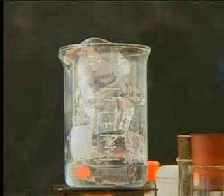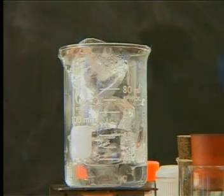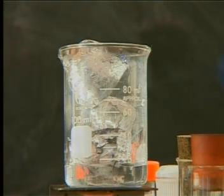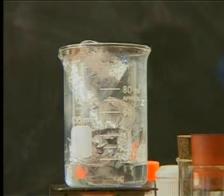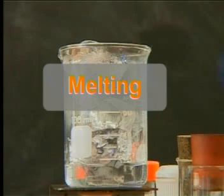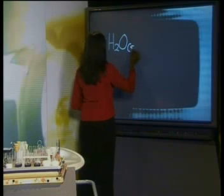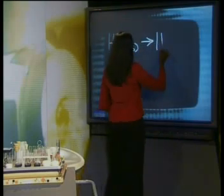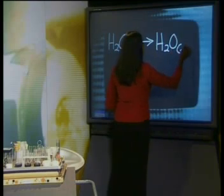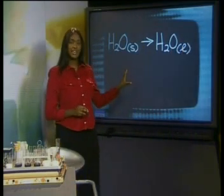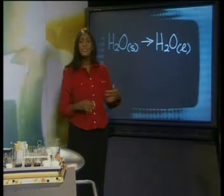Physical changes also take place when substances change phase. In the first beaker, there are ice cubes. But if the ice cubes are left on the lab counter for a while, they melt to form liquid water. Ice or solid water can change from the solid phase to the liquid phase. We call this change of phase melting. When we want to represent this as a reaction, we write H2O(s) becomes H2O(l). The S in brackets means solid and the L in brackets means liquid.